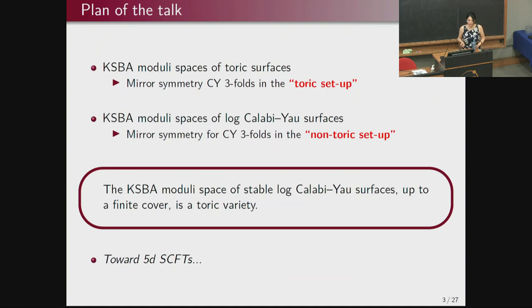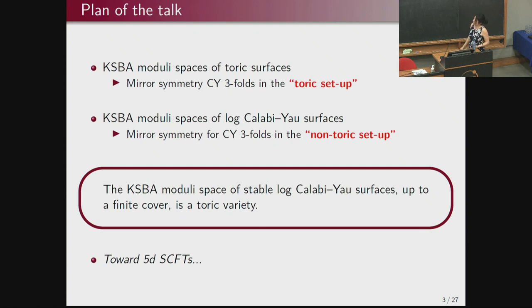Here's the plan of my talk. I will tell you what are the KSBA moduli spaces in the toric setup, review known results on moduli spaces of such toric surfaces, and explain using mirror symmetry how these can be understood via toric mirror symmetry for Calabi-Yau three-folds. Then I will tell you about KSBA moduli spaces in the non-toric setup — moduli spaces of so-called log Calabi-Yau surfaces — and how we mathematically understand mirror symmetry in that setting. The main result is that the KSBA moduli spaces of non-toric log Calabi-Yau surfaces are, up to a finite cover, toric varieties. At the very end, I will elaborate how this is related to 5D superconformal field theories.